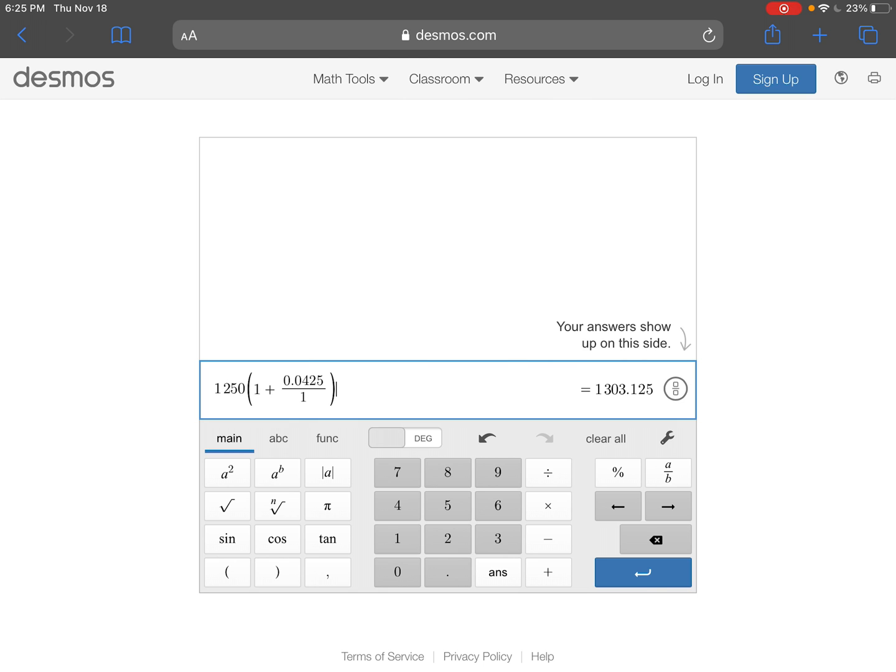I'm going to close this parenthesis. I'm going to use my exponent button. And now remember, in Desmos, when you have more than one thing in your exponent, you must use parentheses. So in my parentheses, I'm going to have 1 times 4. And when I do that,